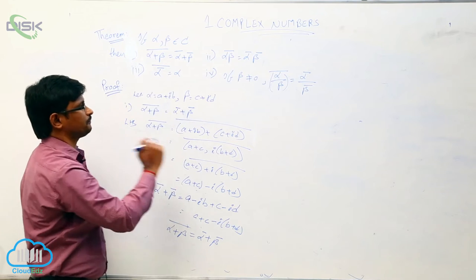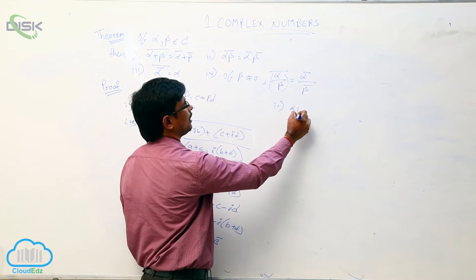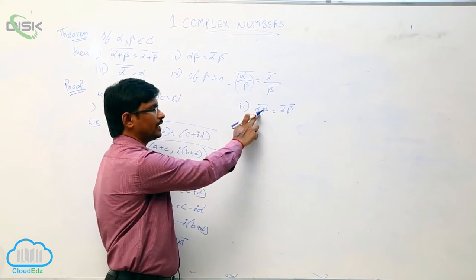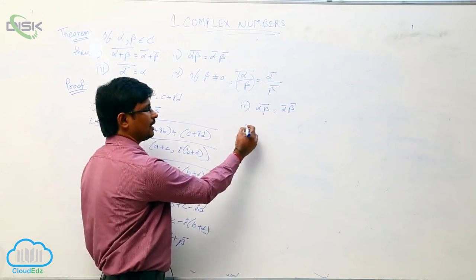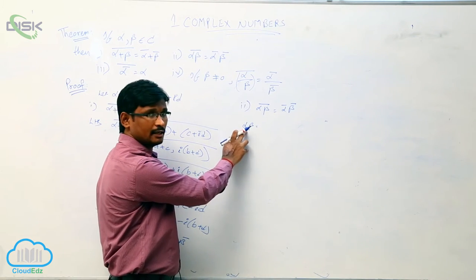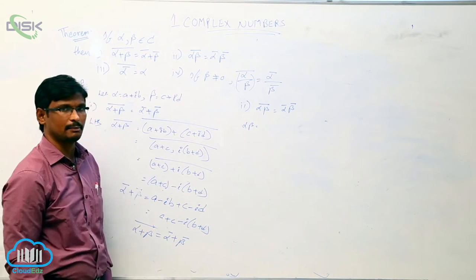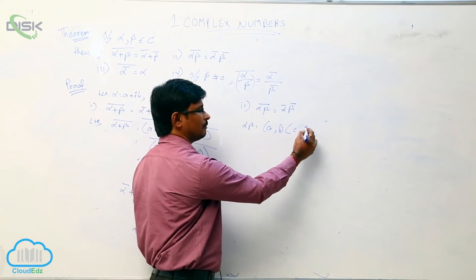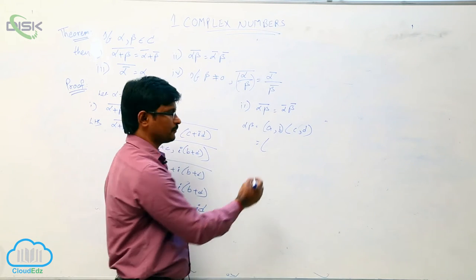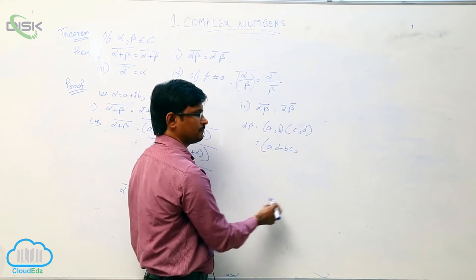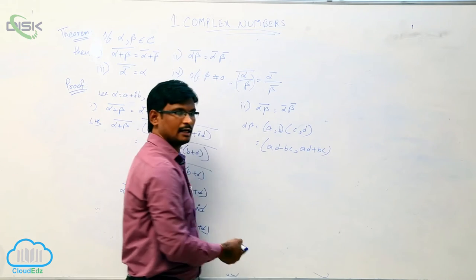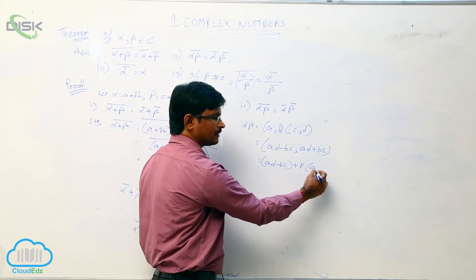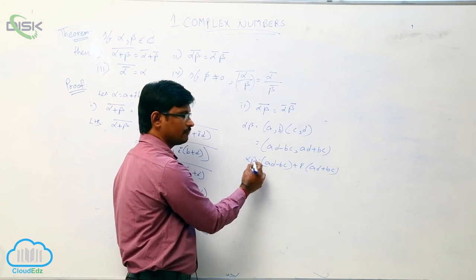Second property: we have to prove that the conjugate of alpha times beta equals alpha conjugate times beta conjugate. First, we find alpha times beta. Writing in ordered pair form: alpha is (A, B) and beta is (C, D). The product of these two is (AC minus BD, AD plus BC). Removing the ordered pair notation: AC minus BD plus i(AD plus BC). This is the value of alpha times beta.